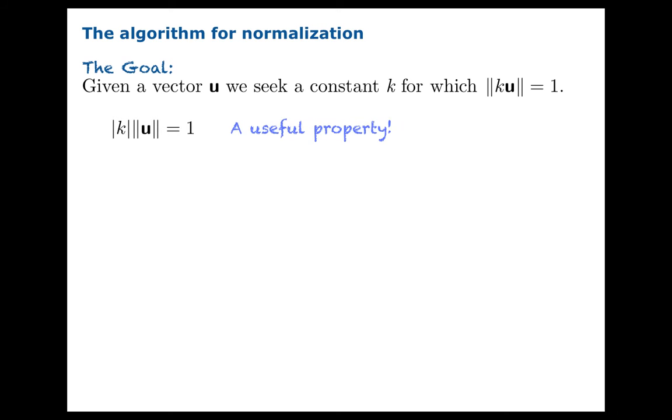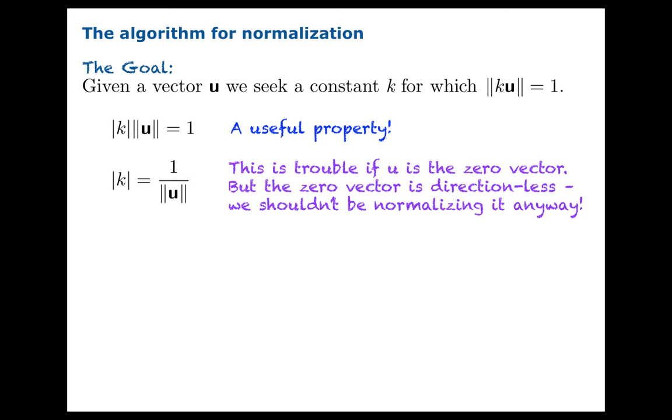How does this work? Let's apply our principle to express the norm of ku as absolute value of k times the norm of u. And we'll solve for k by dividing through by the norm of u. And this looks like trouble because if u were the 0 vector, then its norm would be 0 and you'd be dividing by 0.